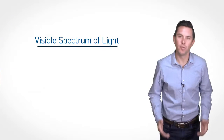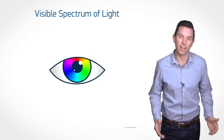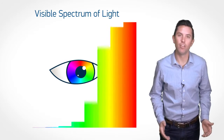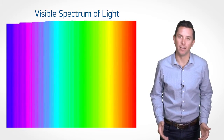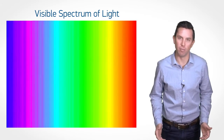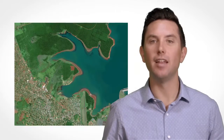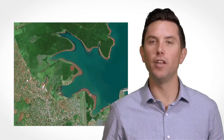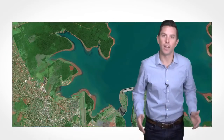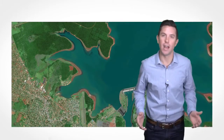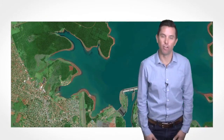The visible spectrum of light, or what the human eye can see, ranges from red to violet — the colors of a rainbow. Satellite imagery is often interpreted using the red, green, and blue spectral bands, providing what we call a natural color image.